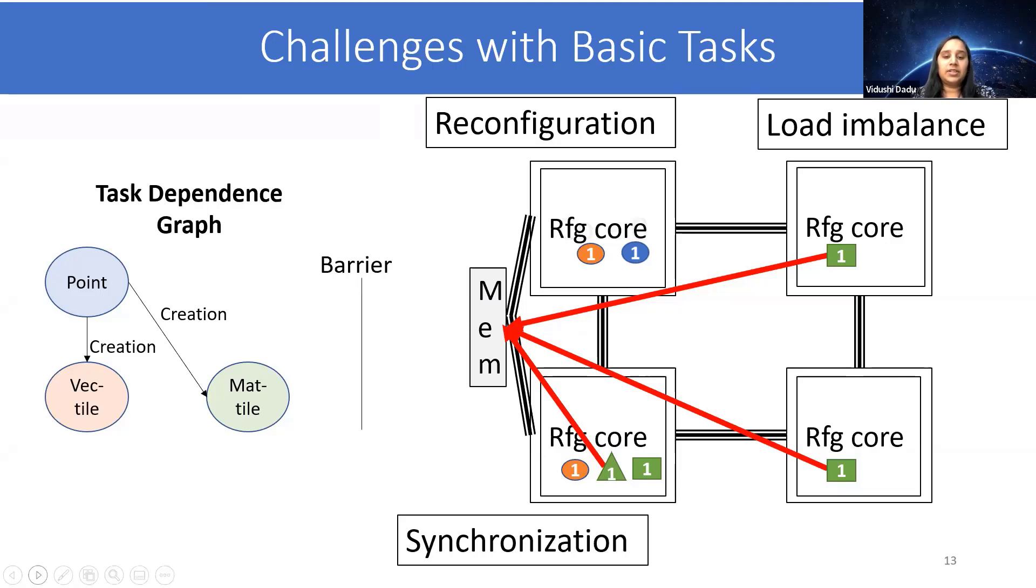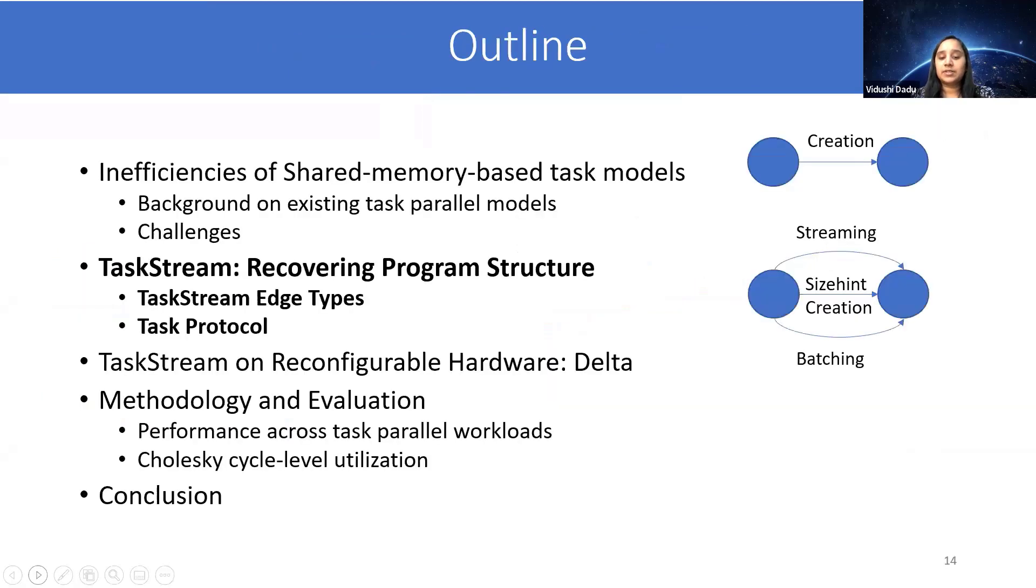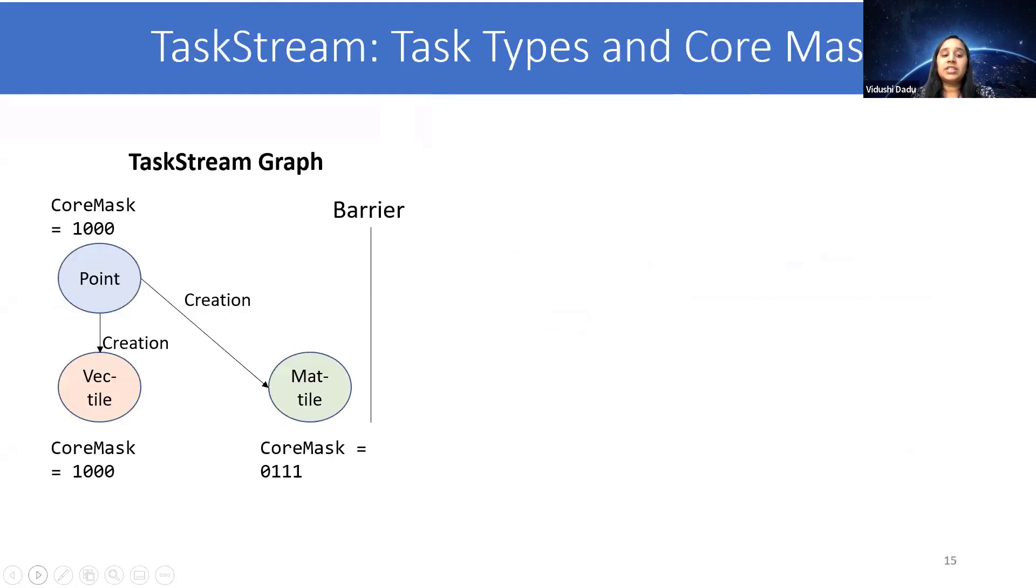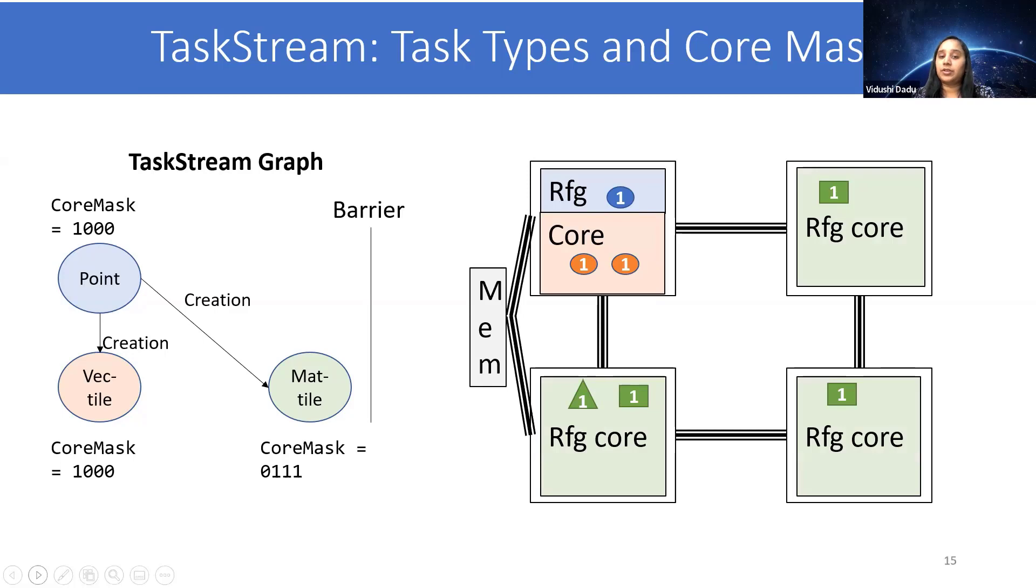In order to deal with these challenges, we propose a novel TaskStream execution model that encompasses all the necessary information for efficient execution of task parallelism on reconfigurable hardware. One such feature is core mask. What we do is each task type can be annotated with a core mask, where the set bit represents which core its instances can be scheduled to. So for example, the instances of point and vector can be scheduled to only core 0, while for matrix, they can be scheduled to cores 1, 2, and 3. Therefore, there would be no need for reconfiguration.